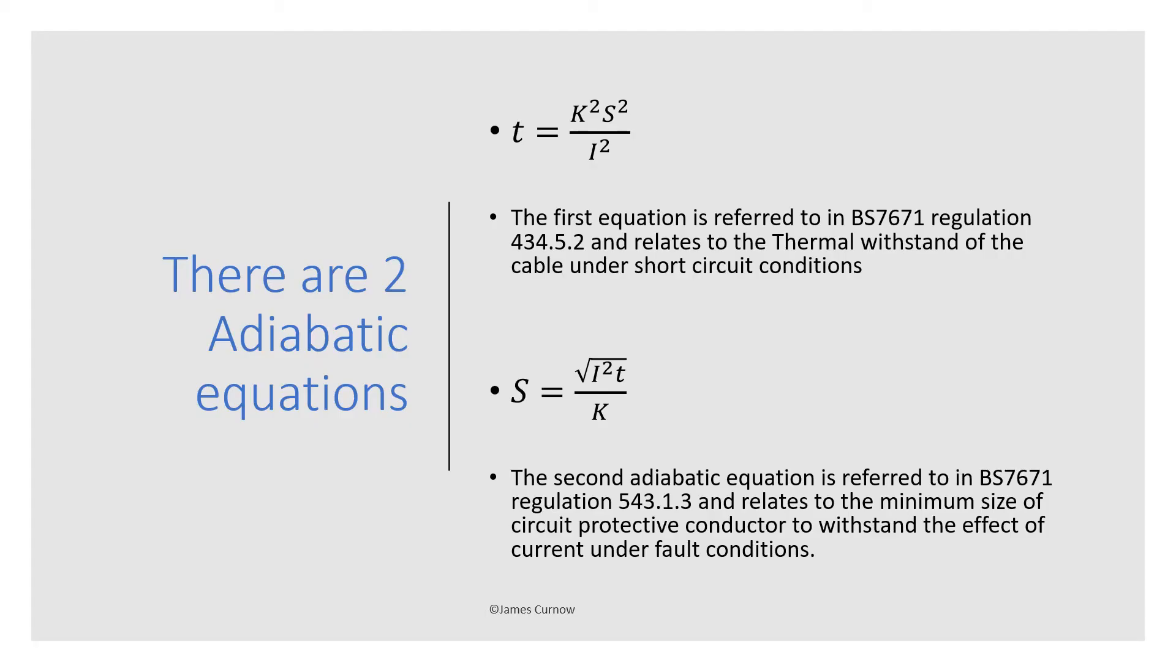The first thing to point out is that there are actually two adiabatic equations and they're both mentioned in different sections in the wiring regulations but I find it useful to explain them together. The first equation is referred to in BS7671 regulation 434.5.2 and this relates to the thermal withstand of the cable under short circuit conditions, either line to neutral or line to line in three phase.